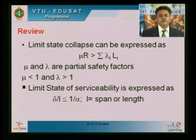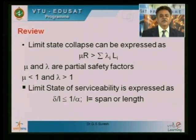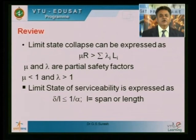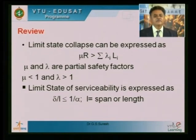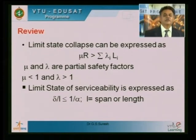I told you that the resistance, calculated as mu times R, should be greater than the summation of lambda_i times L_i, where mu and lambda are partial safety factors. Mu is less than 1 and lambda is greater than 1. We make the summation for dead load, live load, wind load, earthquake load, etc.